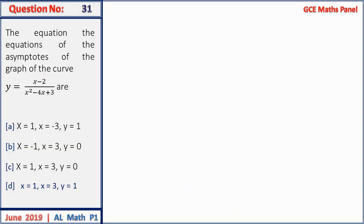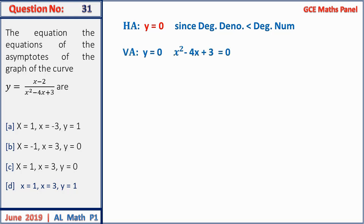Question 31: find the equations of the asymptotes of the curve. Since the degree of the numerator is less than the denominator, the horizontal asymptote is y = 0. For vertical asymptotes, solve x² − 4x + 3 = 0, giving x = 1 and x = 3. These three asymptotes give answer C.